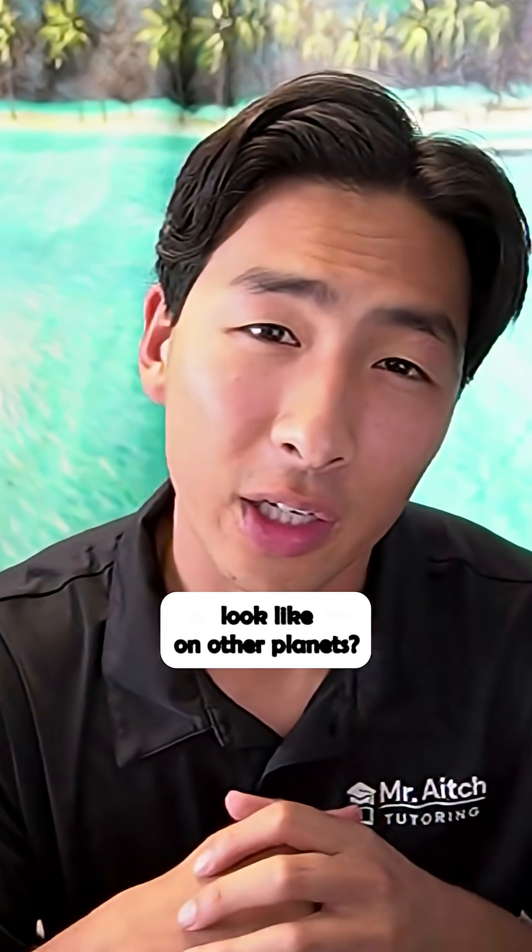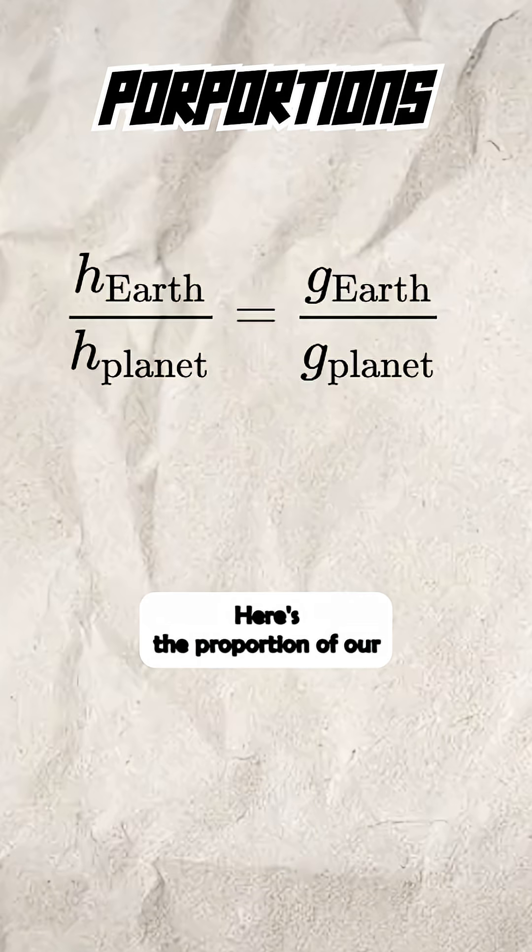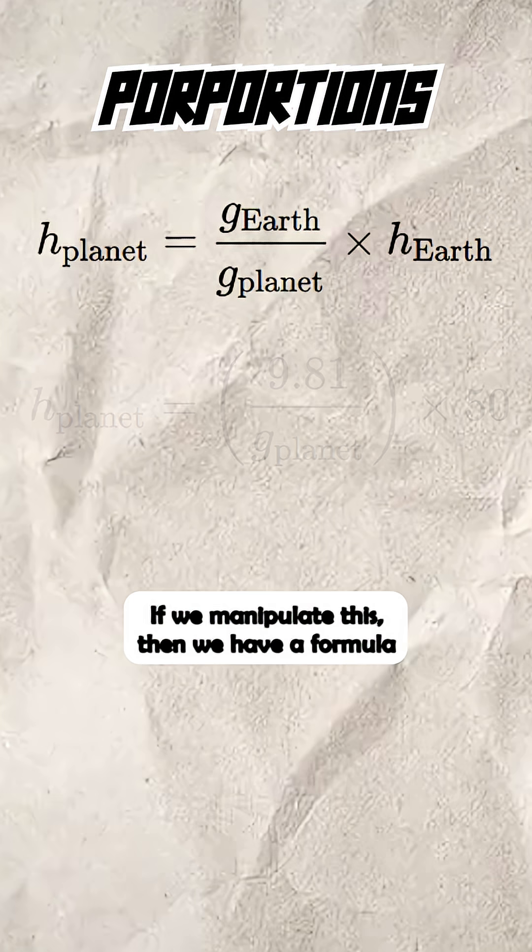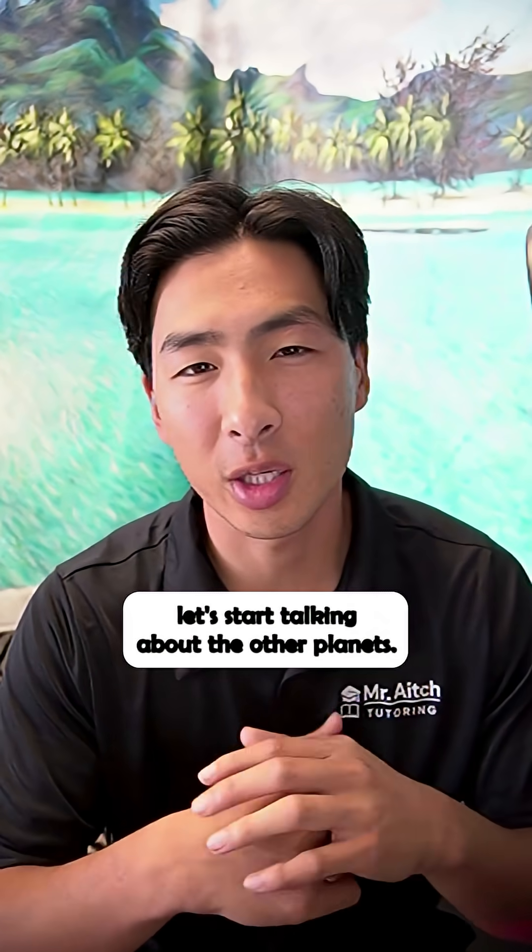What would a 50-inch vertical look like on other planets? We are dealing with proportions. Here's a proportion of our vertical jump to Earth's gravity. If we manipulate this, then we have a formula that we can use for each planet. Now that we have our formula, let's start talking about the other planets.